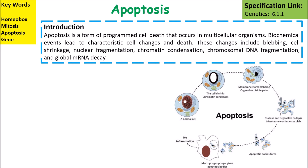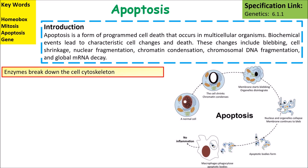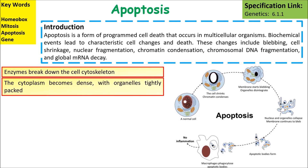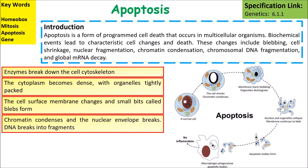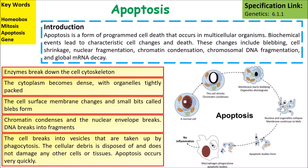The process of apoptosis involves enzymes breaking down the cytoskeleton of the cell. The cytoplasm becomes dense with organelles tightly packed together. The cell surface membrane changes and small bits start to bleb off. Chromatin condenses and the nuclear envelope breaks, so the DNA breaks down into fragments. The cell then breaks into vesicles that are taken up by phagocytosis, and the cellular debris is disposed of quickly.